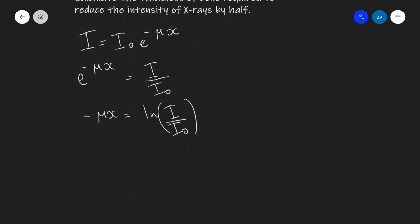So -μx will be equal to the natural log of I/I₀. Once again I'm going to take the negative of both sides of the equation. So what I'm left with is that μx will be equal to... now the negative ln is going to flip. So what we're going to get is ln(I₀/I).